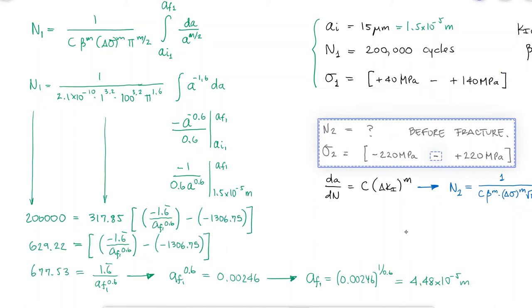This final crack length of 44.8 microns would be the initial crack length of the second stage with the alternating tensile and compressive stresses.